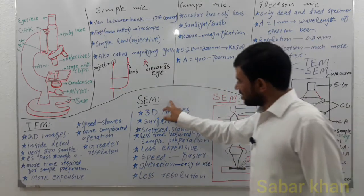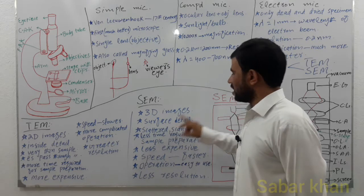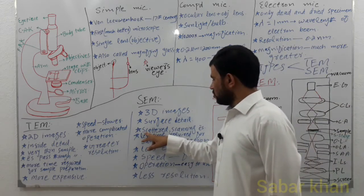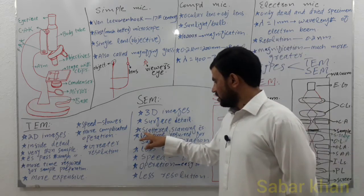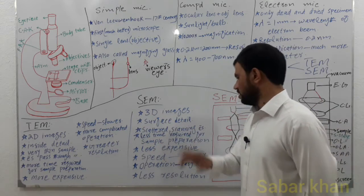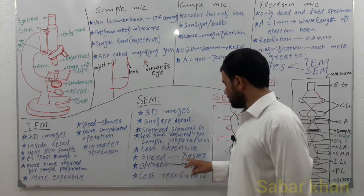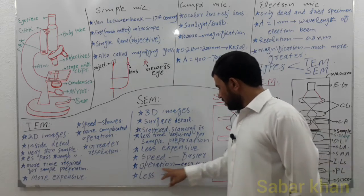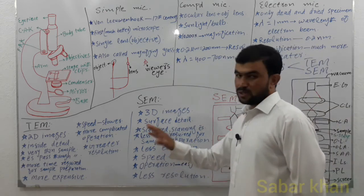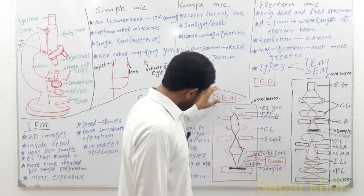In the scanning electron microscope, three-dimensional images are produced, but we can only obtain the surface detail of the object. There is no transmission of electrons; instead, there is scanning and scattering of electrons. SEM requires less time for sample preparation, is less expensive, faster, and easier to operate compared to TEM, though its resolution power is less. Here are the diagrams of the transmission electron microscope and the scanning electron microscope.